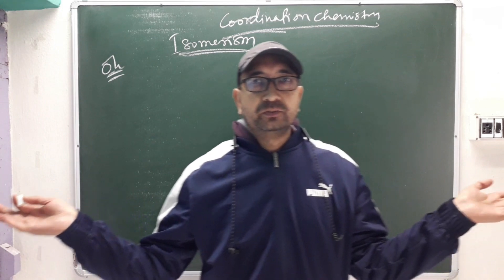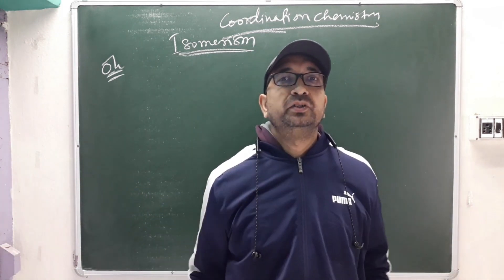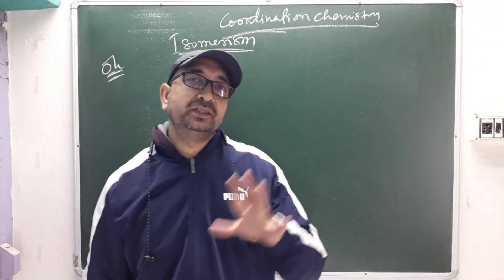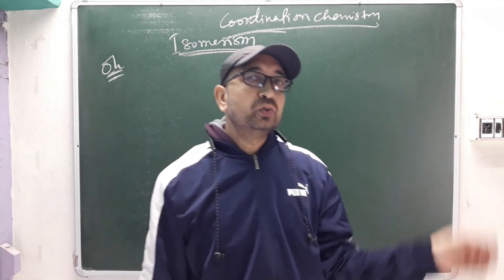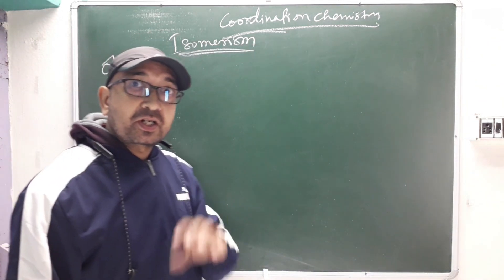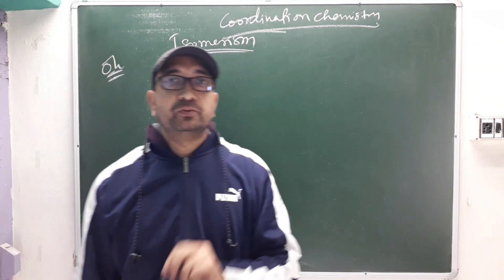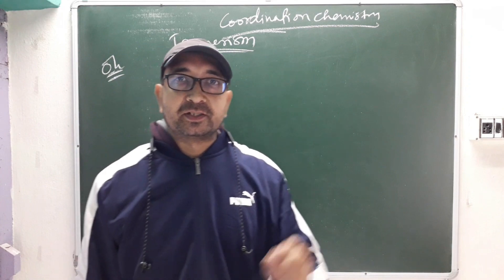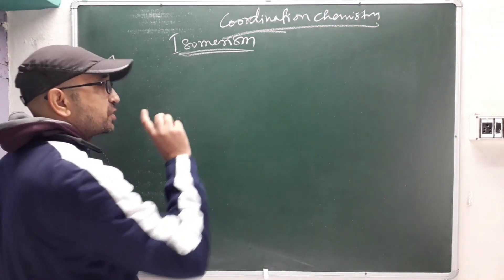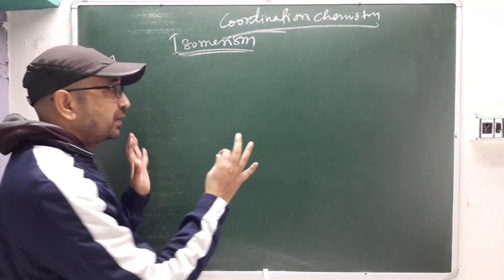For octahedral complexes, isomerism can be divided into stereo isomers and structural isomers. Under stereo isomers we have geometrical isomers and optical isomers. Under structural isomers we have linkage isomers, ligand isomers, coordination isomers, and ionization isomerism.